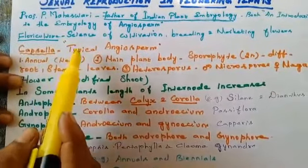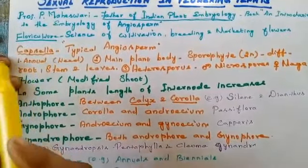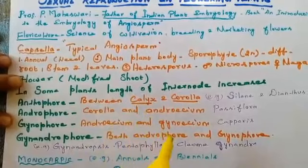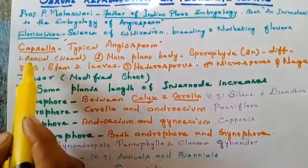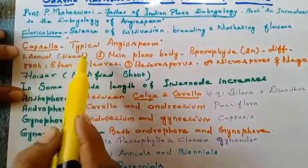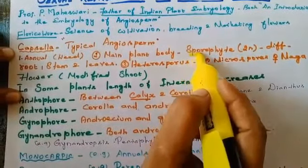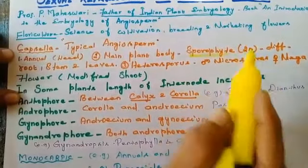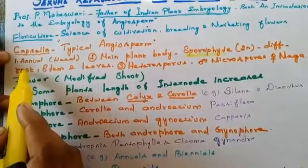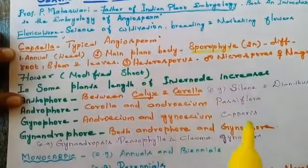Capsella is considered as a typical angiosperm. Why is it said to be a typical angiosperm? Because Capsella possesses older angiospermic characters. Let us see the characters of Capsella. It is an annual plant and it grows as a weed. The main plant body of Capsella is known as the sporophyte. It is diploid in condition and the plant body, the sporophyte, is differentiated into root, stem, and leaves.